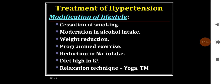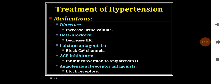Since 90% of hypertension is idiopathic, treatment focuses on lifestyle modification: cessation of smoking, moderation in alcohol intake, weight reduction, programmed exercise, reduction in sodium intake, high-potassium diet, and relaxation techniques like yoga and transcendental meditation. Medications used include diuretics to decrease urine volume, beta blockers to decrease heart rate, calcium antagonists blocking calcium channels, ACE inhibitors inhibiting conversion of angiotensin 1 to angiotensin 2, and angiotensin 2 receptor blockers.